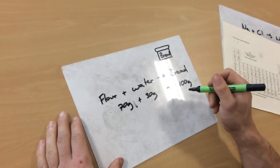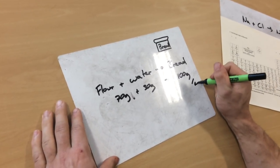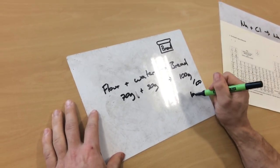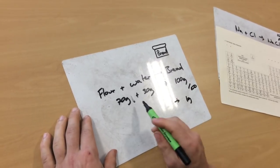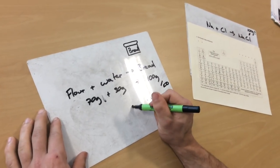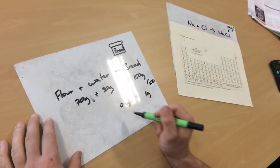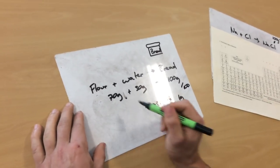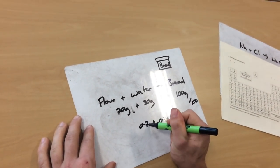Well, the way I do it is I just divide this side by 100, so that gives me one gram of bread. And I do the same to the other side. So I divide 30 by 100, and that gives me 0.3 grams. And I divide that by 100, and that gives me 0.7 grams.